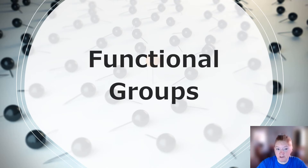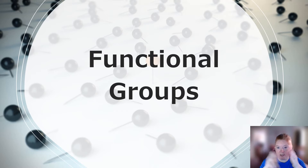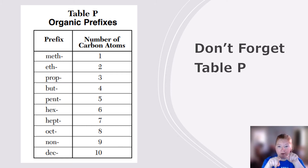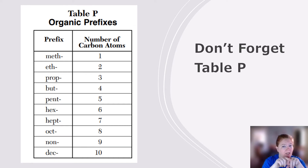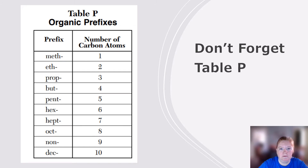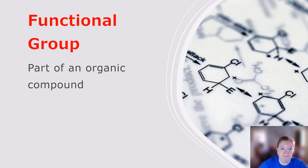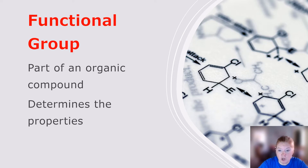All right, we're ready to learn about functional groups — this is a huge piece of organic chemistry. Don't forget about Table P, which helps us name carbon chains: carbon connected to carbon connected to carbon. What is a functional group? It's part of an organic compound, and it helps determine the properties.